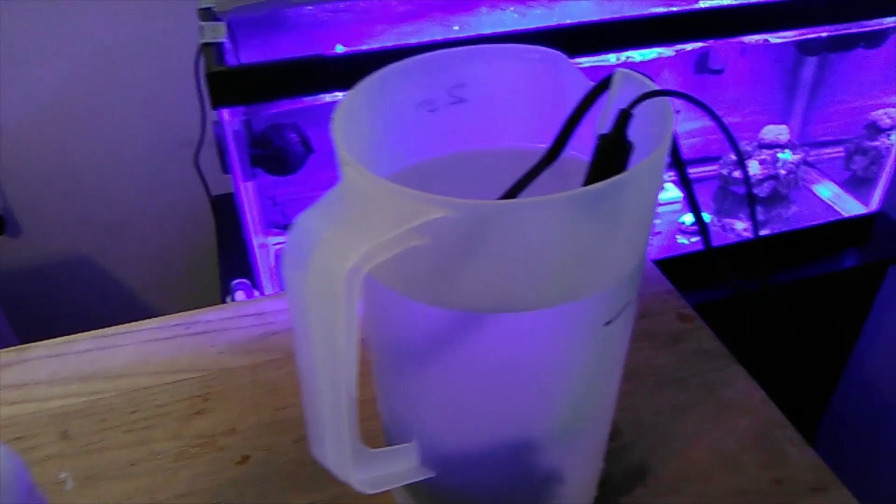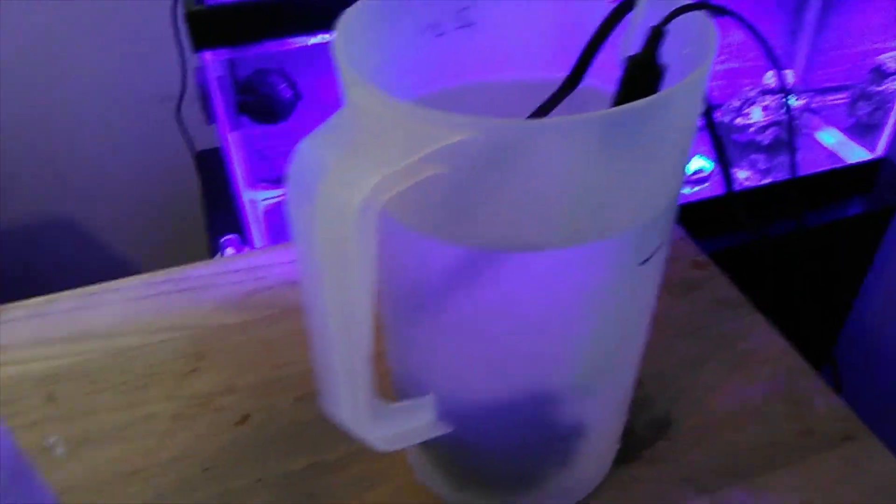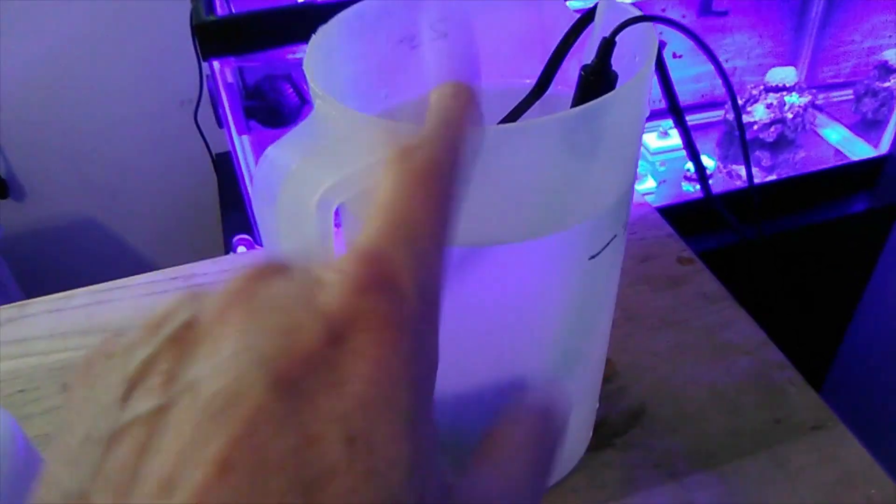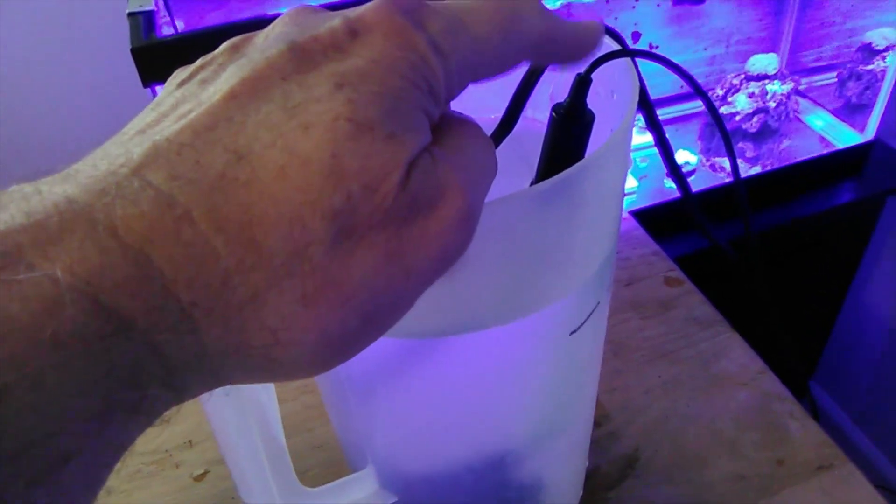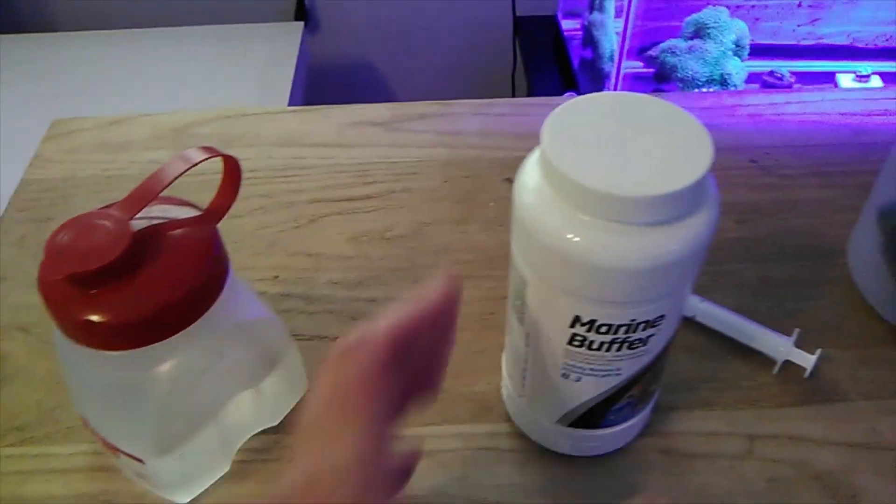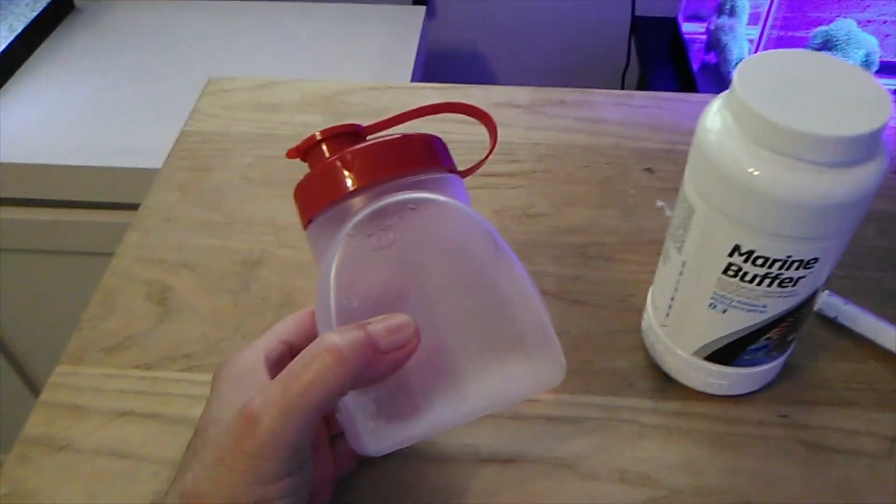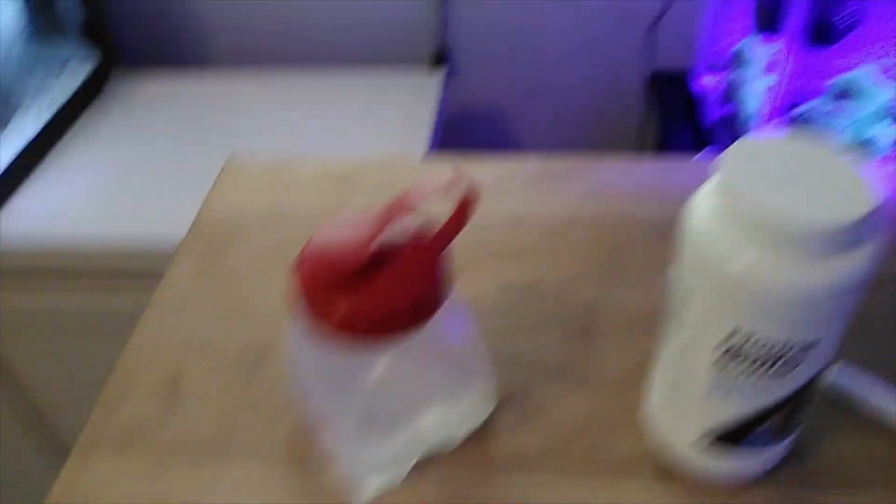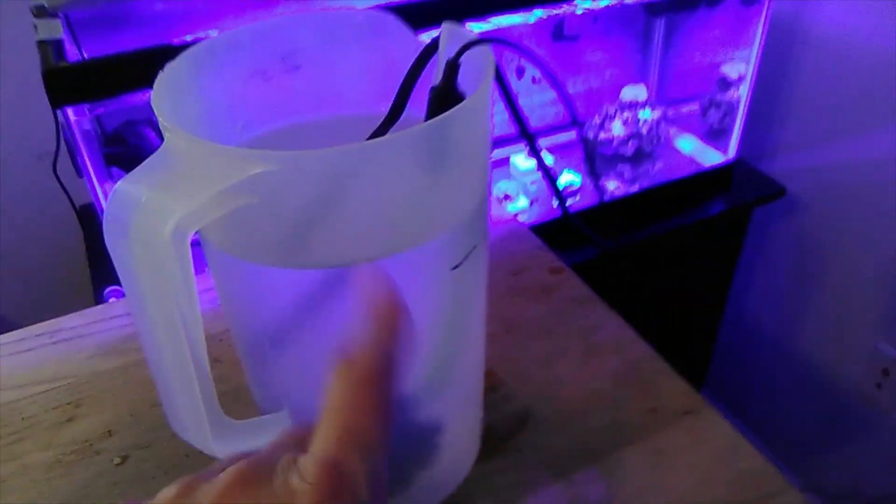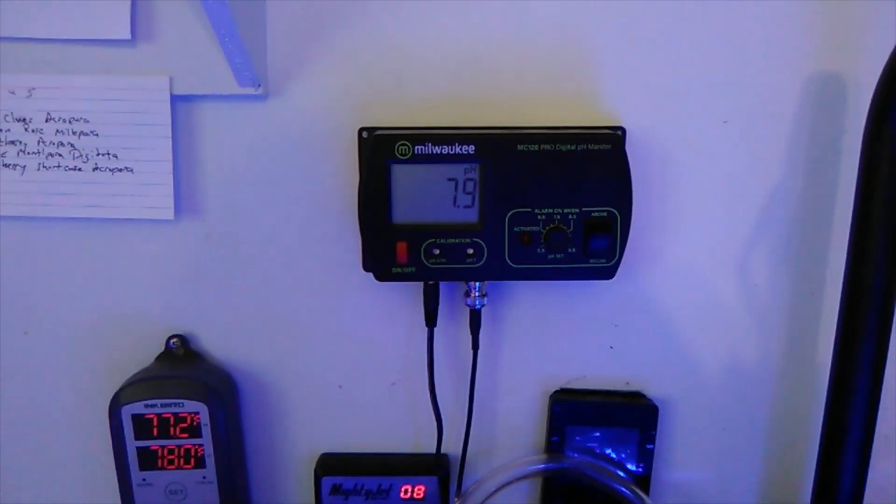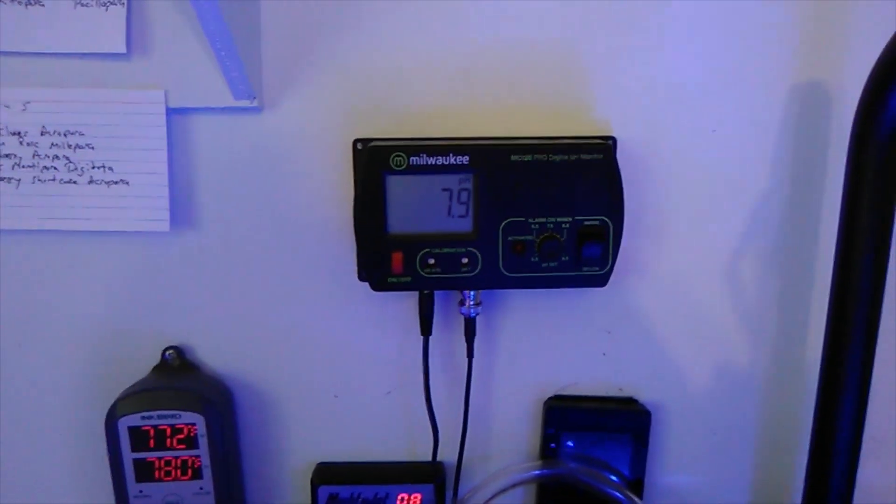Let's test the claims of the Seachem Marine Buffer. I've set up a little experiment here. Got a little beaker. I took my pH probe out of my tank. Got a little powerhead down in there. I followed the directions on the back. It says one level teaspoon per one cup of water. So that's what this is. This is freshly made saltwater, by the way. It's not tank water. And Reef Crystals, freshly made, has a pH according to my meter of 7.9.